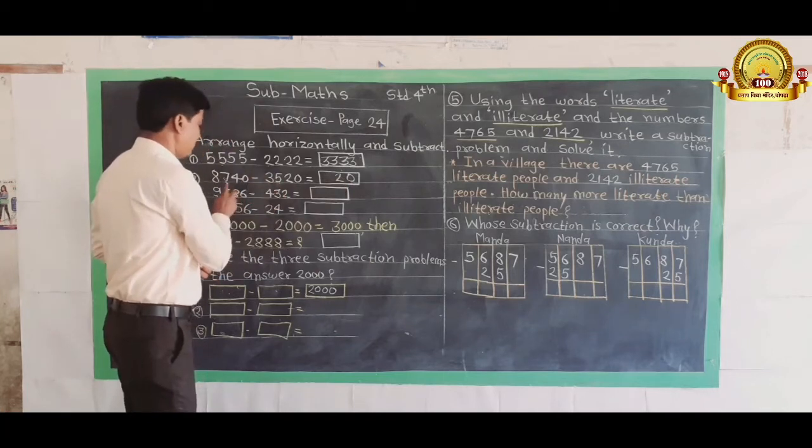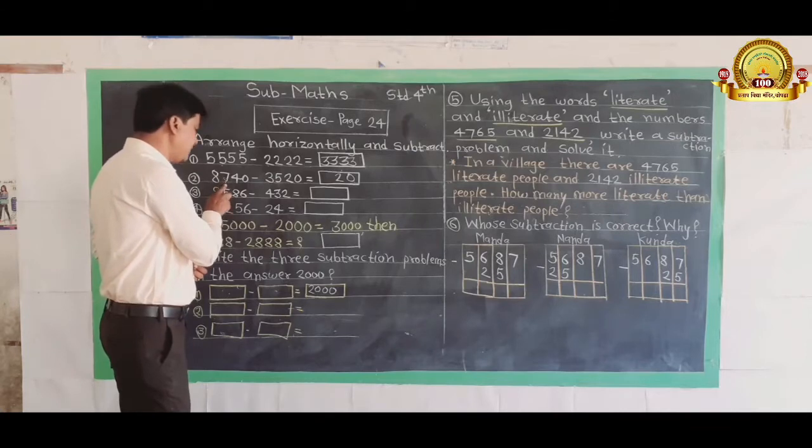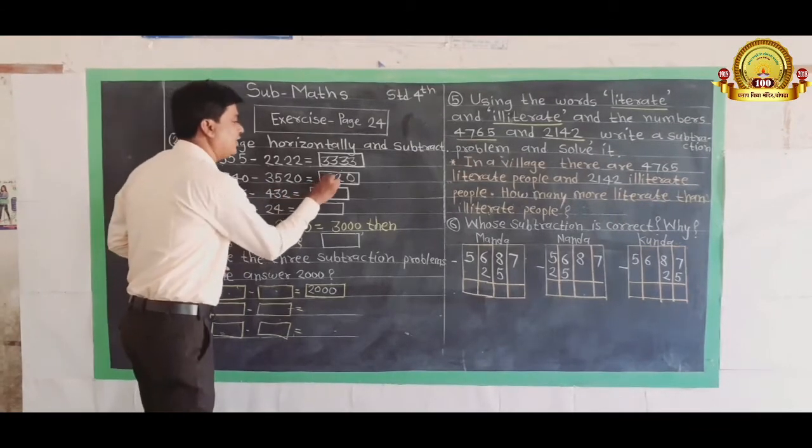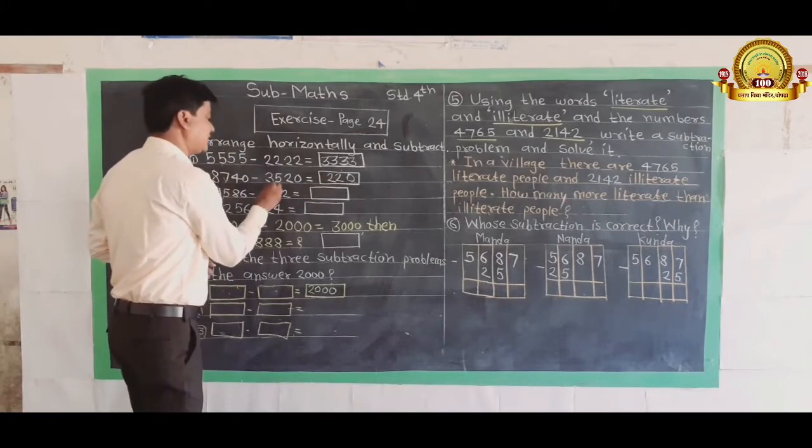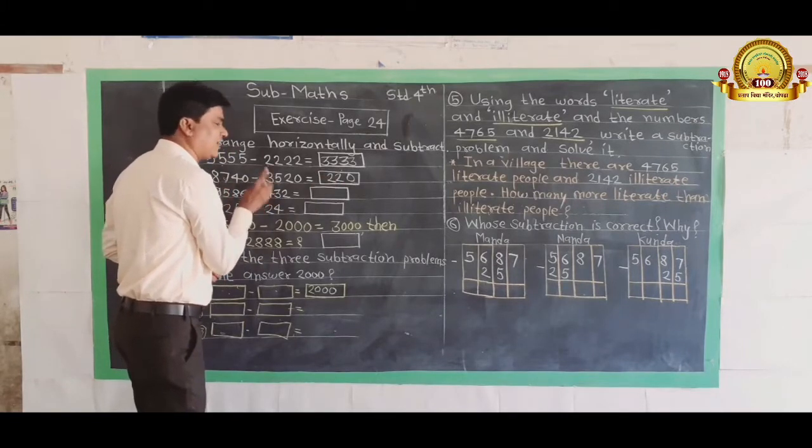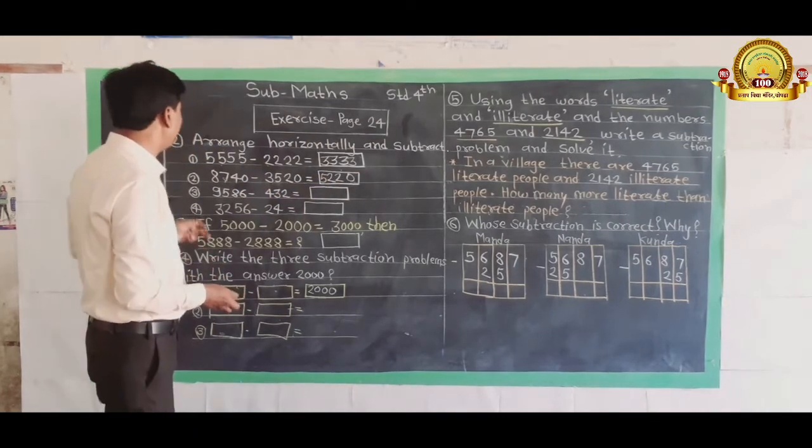7, here is on 100th place, there is 7 and here is 5. 7 minus 5 is 2. 8 minus 3, here is 8,000, here is 3,000. 8,000 minus 3,000 is 5,000. Answer is 5,220.